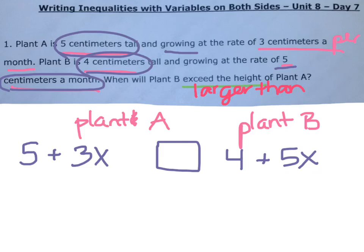We just need to think if it's going to be underlined or not. Can they be equal to? Can it be larger than or equal to? Or does it have to be taller? Well, it doesn't say when will plant B be the same size or larger than. It just says when will it be larger than? When will it exceed the height?